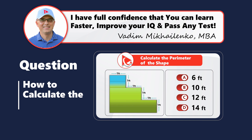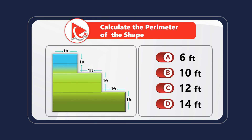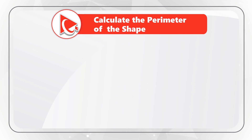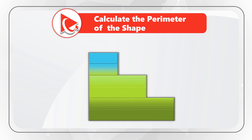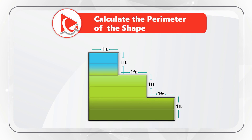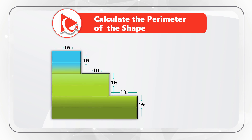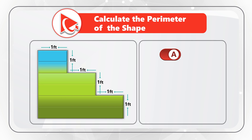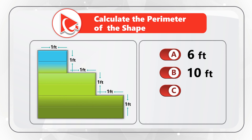I love this question because it tests your spatial reasoning, and if you try to solve it on your own, it boosts your IQ and intelligence. You're presented with an unusually shaped figure which has some measurements, and you need to calculate the perimeter of the given shape and select it out of four possible choices: choice A 6 feet, choice B 10 feet, choice C 12 feet, and last but not least choice D 14 feet.